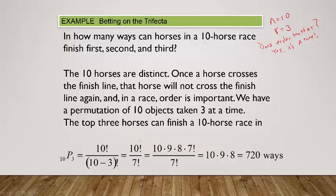Just to show this by hand: 10 factorial is 10 × 9 × 8 × 7 × 6 × ... and the denominator is 7 factorial. The 7 factorial in the numerator and denominator cancel, and you're just left with 10 × 9 × 8, which is 720 ways.